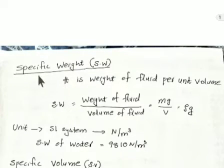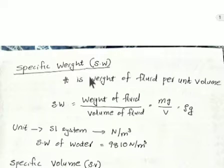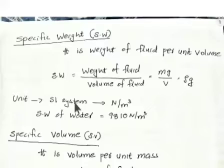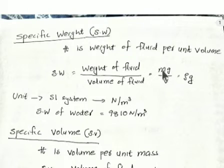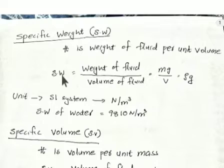New topic: specific weight, specific volume, and specific gravity. Specific weight is the weight of fluid per unit volume. So specific weight equals weight of fluid divided by volume of fluid. Weight of fluid is mass times gravity divided by volume, and mass by volume is density.